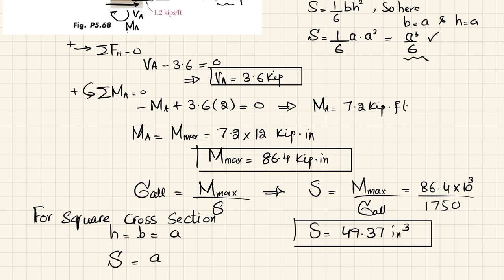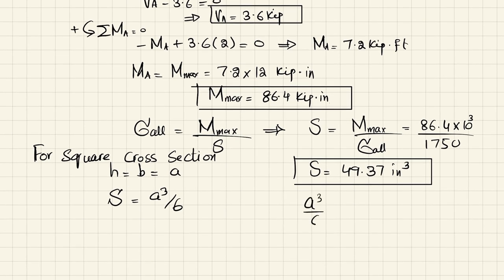a cubed over 6. So you can just put a cubed over 6 is equal to 49.37, so a cubed is equal to 6 into 49.37, and a will be equal to cube root of 6 into 49.37. So by